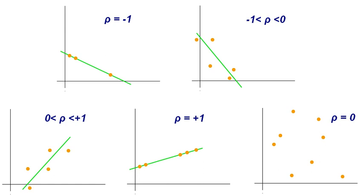The p-value is the probability of obtaining results as extreme as or more extreme than those observed, assuming the null hypothesis is true; it is also called the calculated probability. It is common to confuse the p-value with the significance level, but alpha is a predefined threshold for calling results significant. If p is less than alpha, the null hypothesis is rejected.